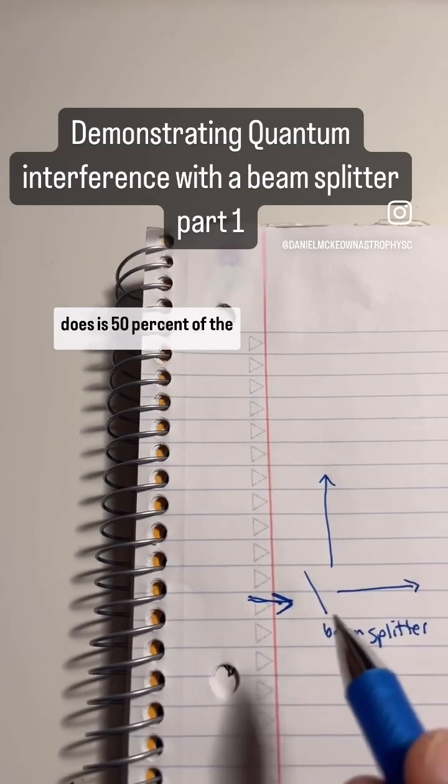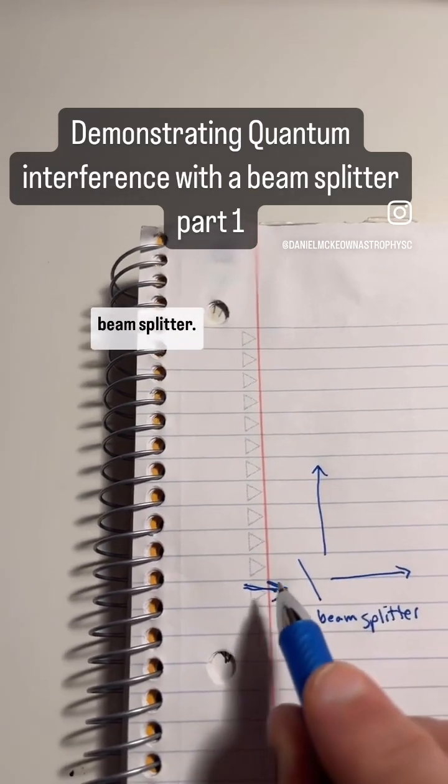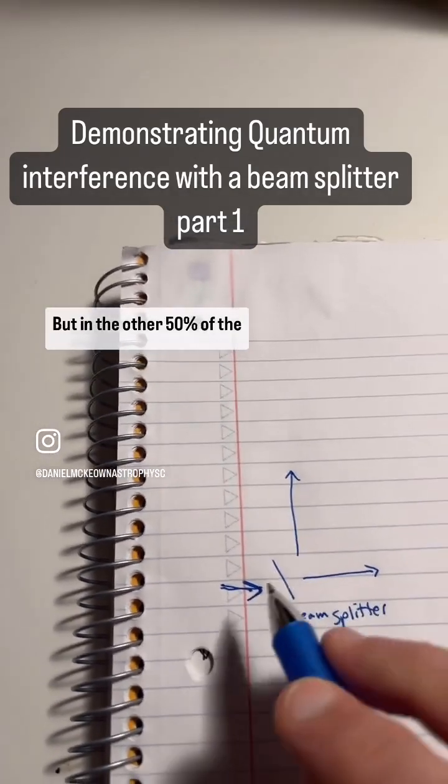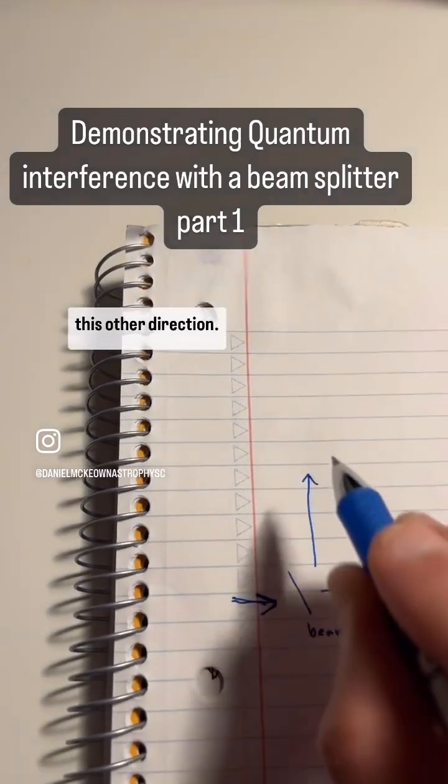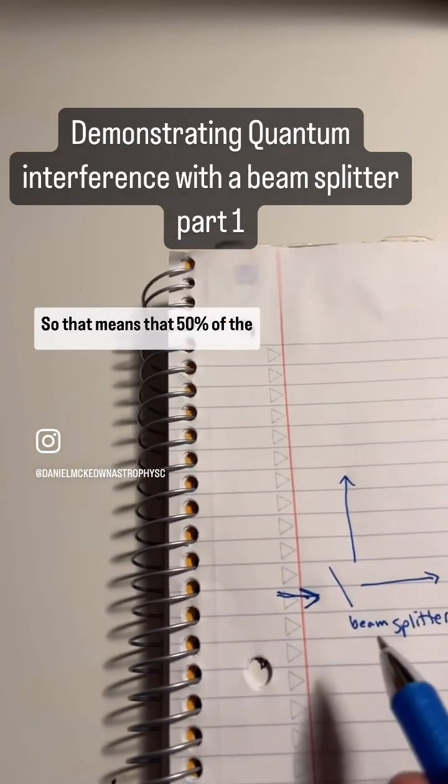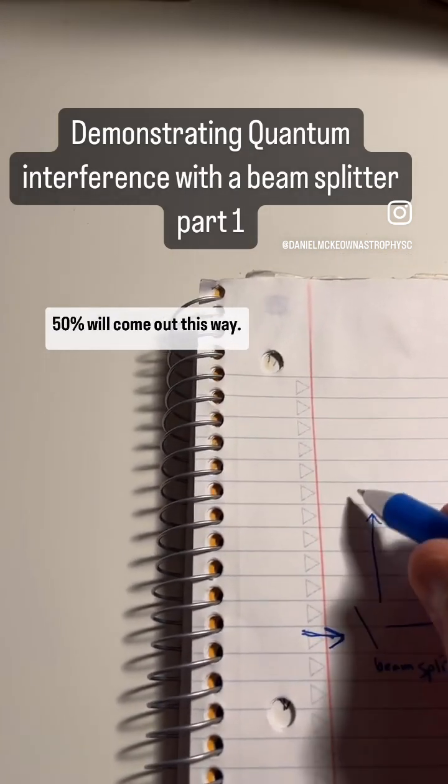Now what the beam splitter does is 50% of the time when a photon enters the beam splitter, it keeps going in the direction that it came from. But in the other 50% of the time, it gets diverted into this other direction. So that means that 50% of the photons coming into this beam splitter will go this way and 50% will come out this way.